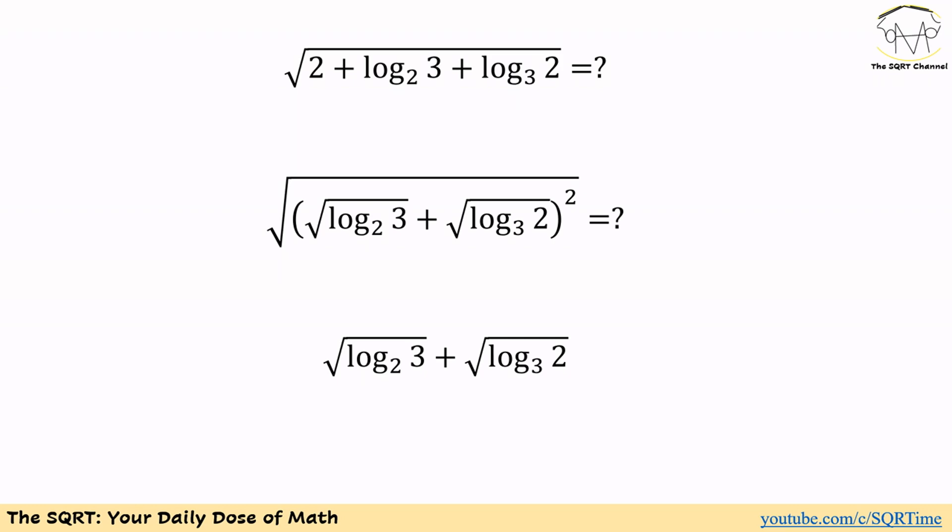So they are equal and we can simply remove the exponent and the radical and write the final expression as square root of log of 3 in base 2 plus square root of log of 2 in base 3. And that's our final answer. Obviously here D is going to be the right choice for us.